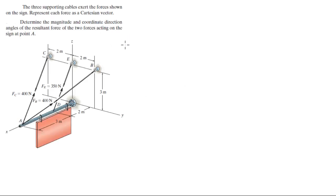We're going to do these two problems: the three supporting cables exert the forces shown on the sign. We represent each one as a Cartesian vector, find the resultant force of the two forces acting at point A, and find the coordinate direction angles of the resultant force.